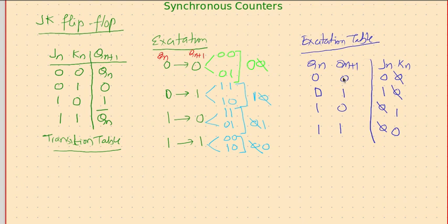Therefore these are the four things: 0 to 0 transition you need 0 don't care as excitation; 0 to 1 transition, J should be 1, K can be anything; 1 to 0, J can be anything, make sure K should be 1; 1 to 1 transition, J can be anything but make sure K should be 0.